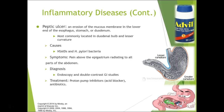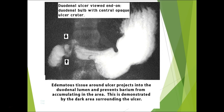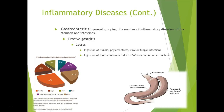A peptic ulcer is an erosion of the mucous membrane in the lower esophagus, stomach, or duodenum — most commonly located in the duodenal bulb or lesser curvature. Symptoms include epigastric pain radiating throughout the abdomen. Usually seen on scope or double-contrast upper GI. Radiographically you see a ring around a crater — we call this a target sign.